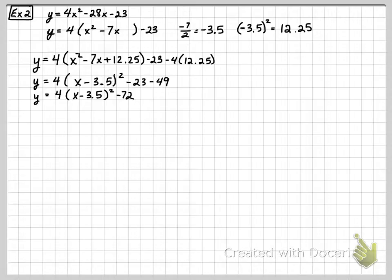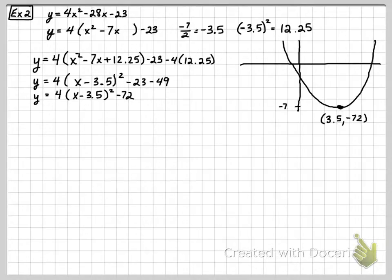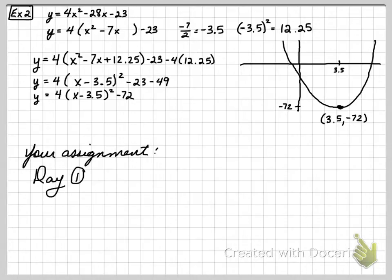What does that tell us? With x at 3.5 and y at negative 72, the vertex is at (3.5, negative 72) and the parabola opens upward. Your assignment for Day 1 is page 192, numbers 1 to 6.